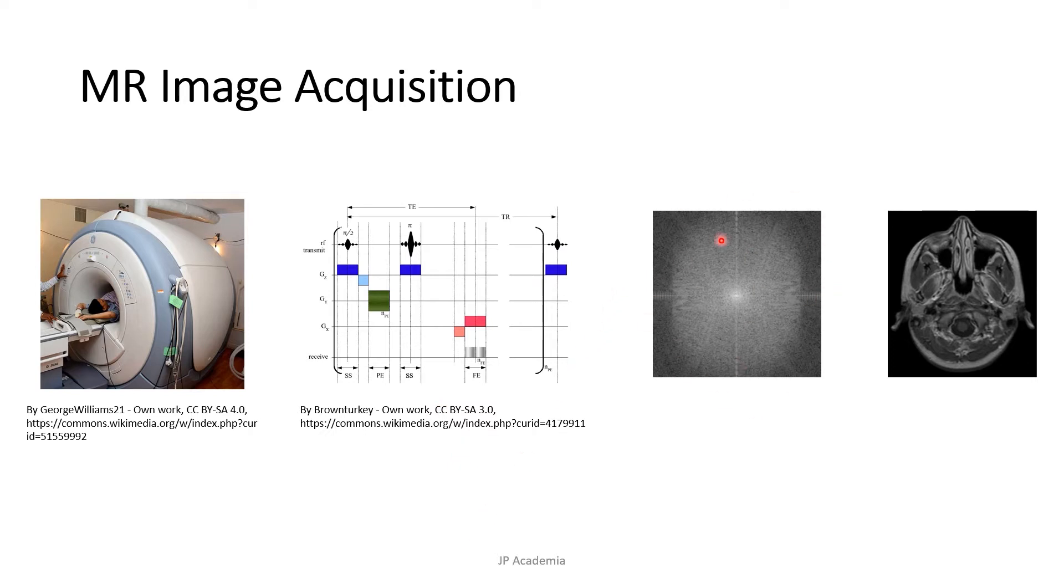Then we will have a K-space acquired, and this is just an array of numbers representing spatial frequencies in the MR image. Finally, we can do an inverse Fourier transform using a fast Fourier transform to get the final MR image.